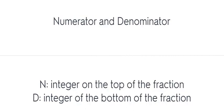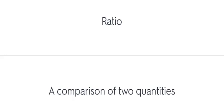Numerator and denominator. N: integer on the top of the fraction. D: integer on the bottom of the fraction. Ratio: a comparison of two quantities.